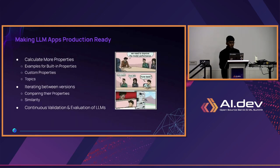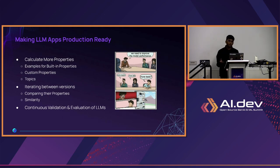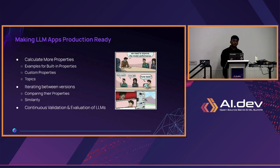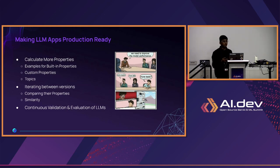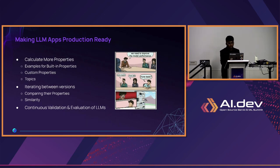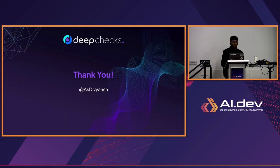For making LLM apps production ready, some best practices: calculate more and more custom properties for your use case; iterate between versions — try multiple LLM models and find which is best for you; and continuously validate and evaluate your LLMs. Thank you.